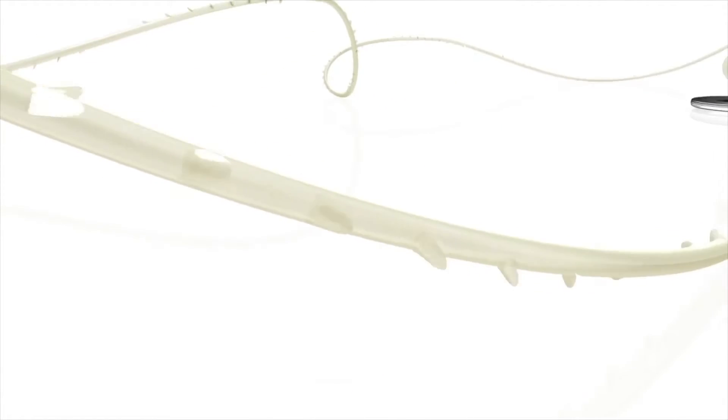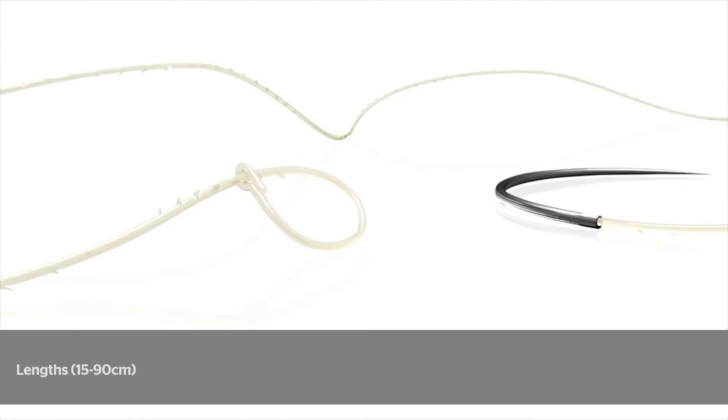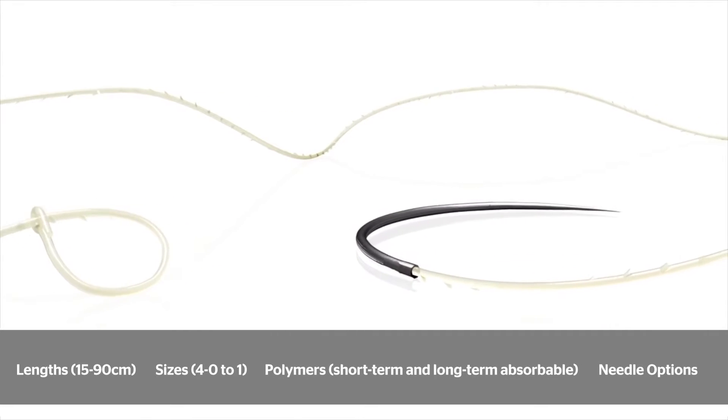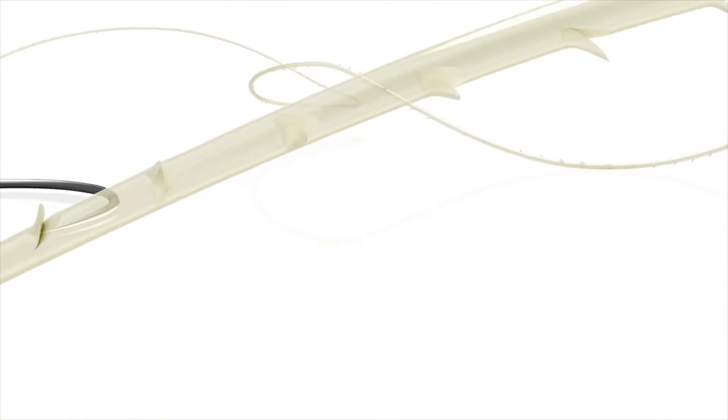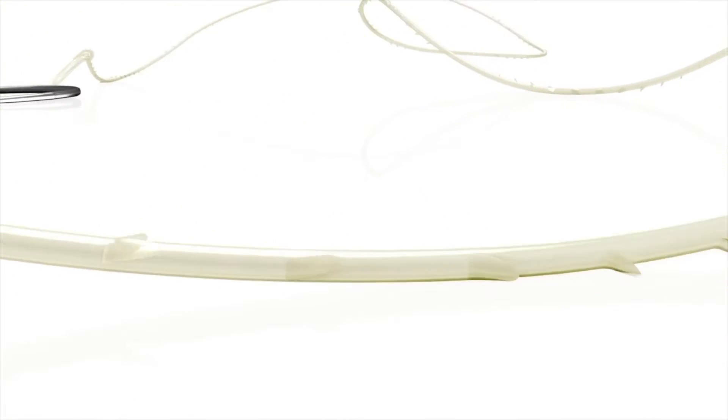Unidirectional Stratafix Spiral Devices are available in different lengths, sizes, polymers and needle options, are manufactured by Ethicon leveraging over 100 years of expertise in premium needle and suture technology, and are designed to meet the needs of surgeons in open, laparoscopic and robotic procedures including appropriate wound holding strength and antibacterial protection for each tissue layer.